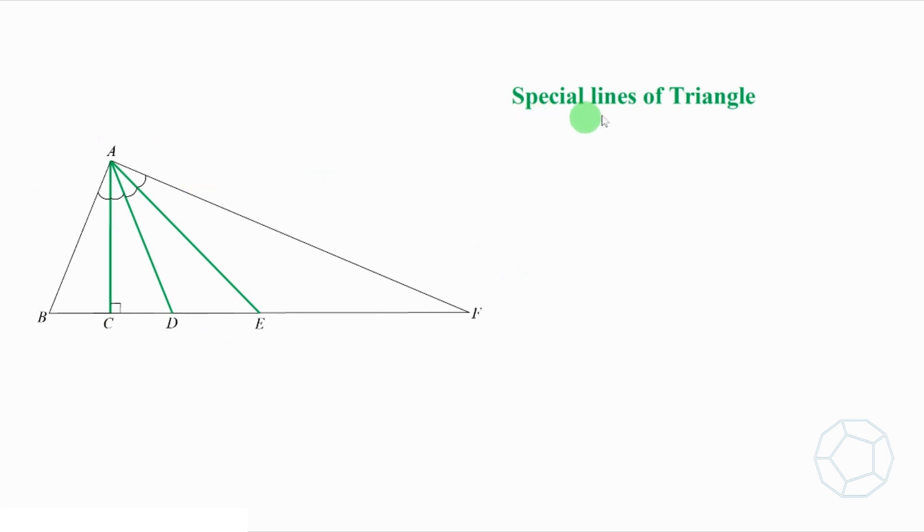It has three types of special lines of triangle. All of them come from the same vertex A. They are the altitude AC, the angle bisector AD, and the median AE.